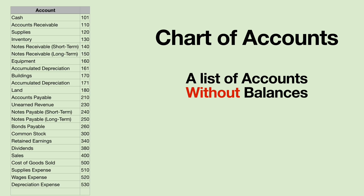So when we want to debit cash, we don't actually debit cash, although we say we debit cash. We debit account 101. And when we want to credit accounts receivable, we actually credit account 110.